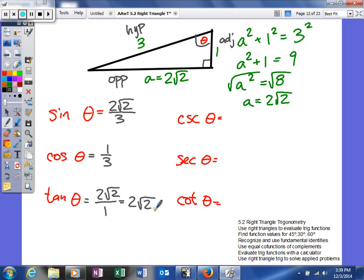And then our cosecant is gonna be the reciprocal of our sine. So we'll have 3 over 2 square root of 2. And then the secant is gonna be the reciprocal of cosine, which will be 3. And then over here we'll get 1 over 2 square root of 2.